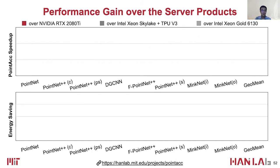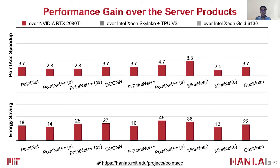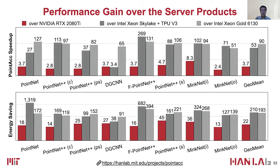Here we show the performance of the full version of Point Tech over server products. The x-axis shows different networks, and the y-axis shows speedup and energy savings separately. Point Tech achieves 3.7x speedup and 22x energy savings over the 2080 Ti GPU, 53x speedup over TPU V3, and 90x speedup over Xeon CPU.